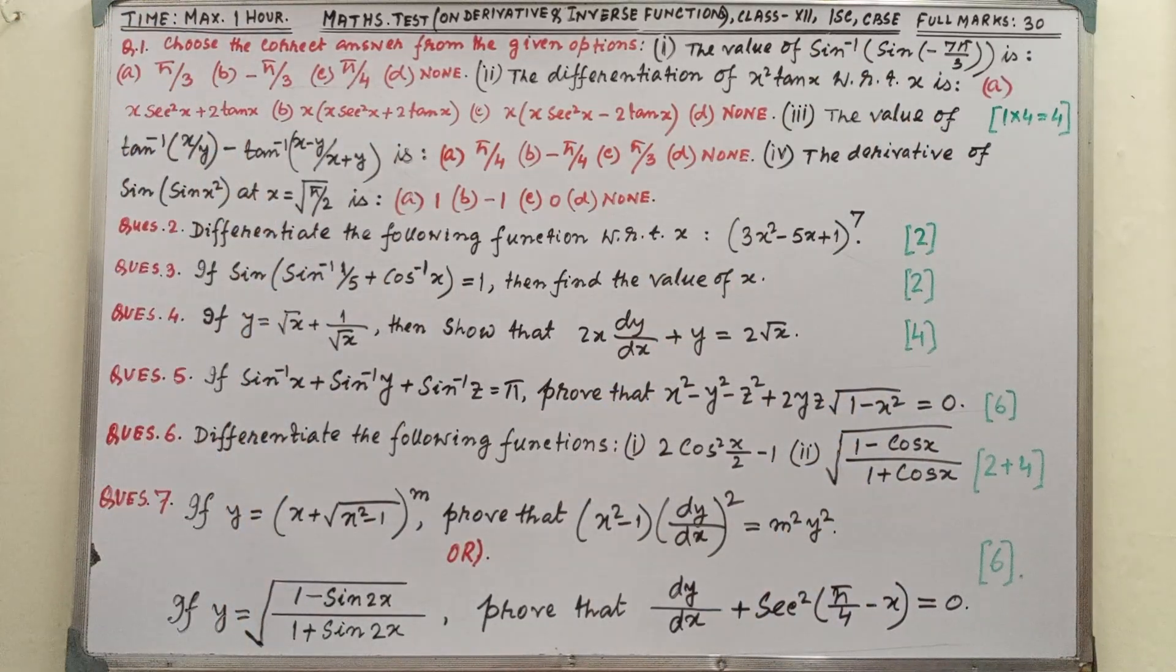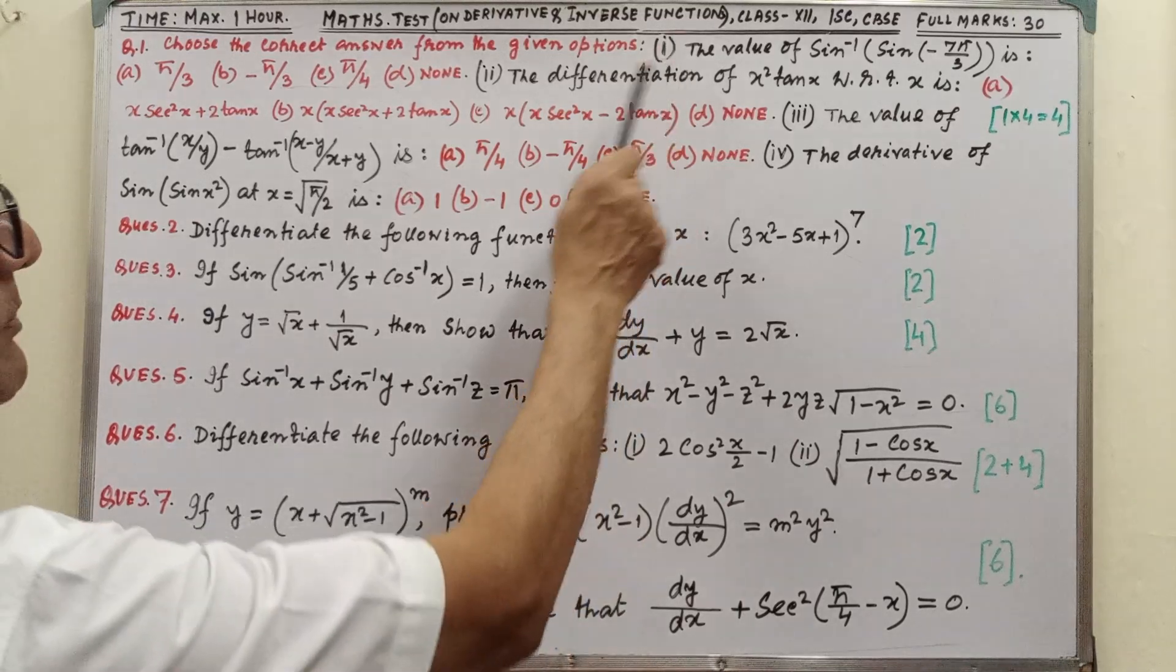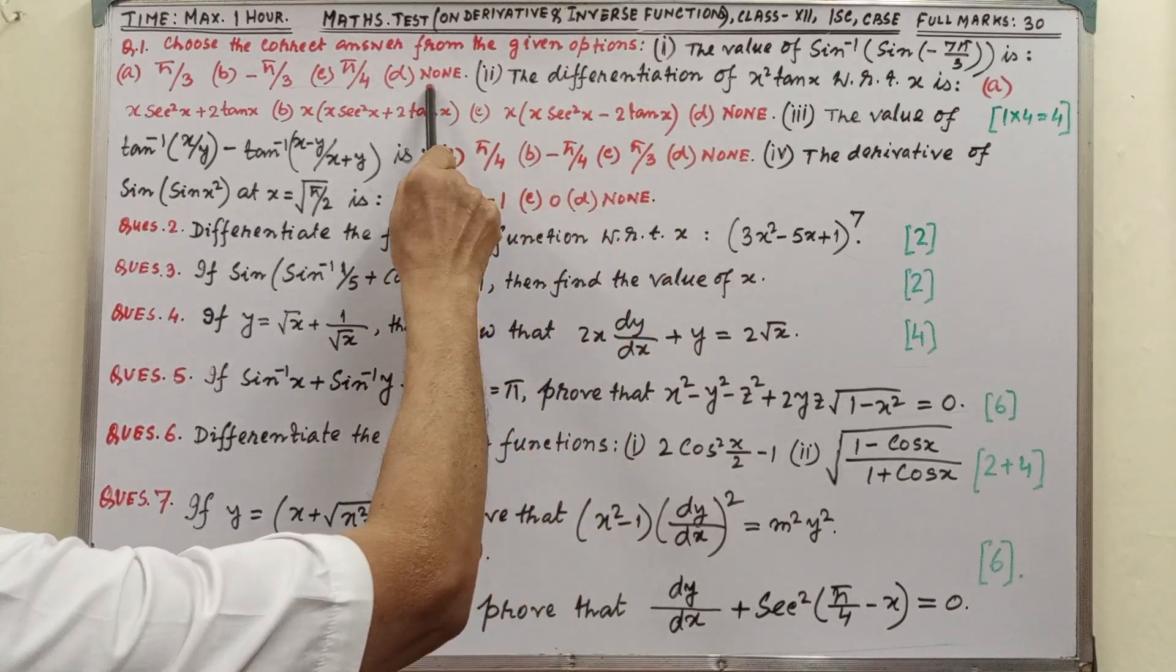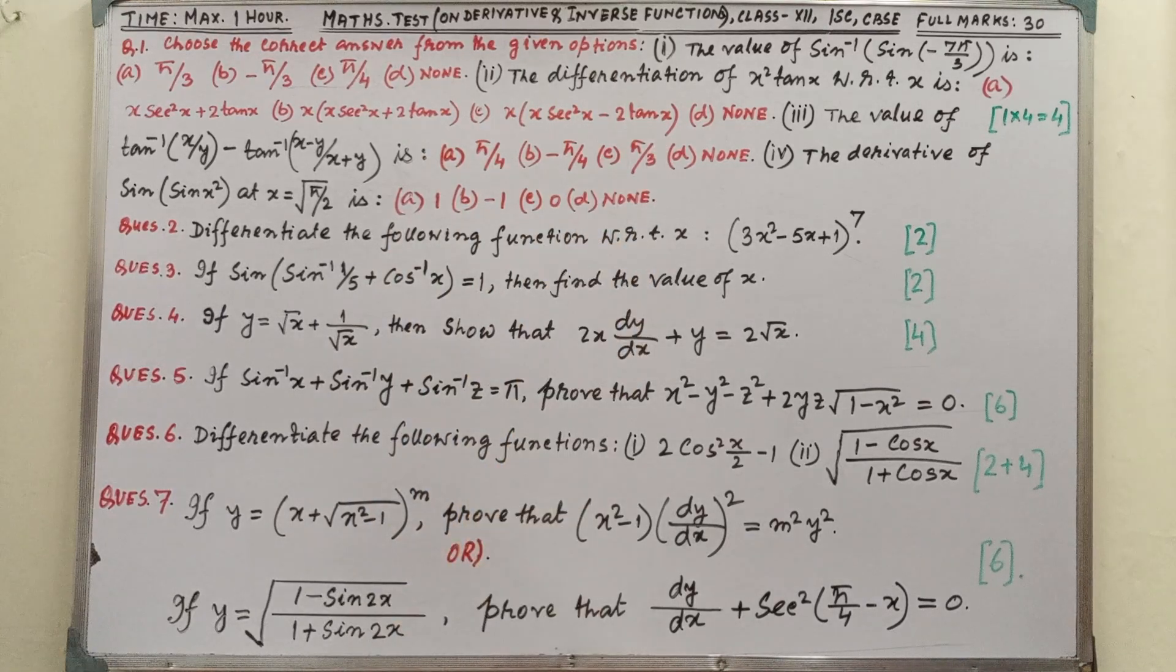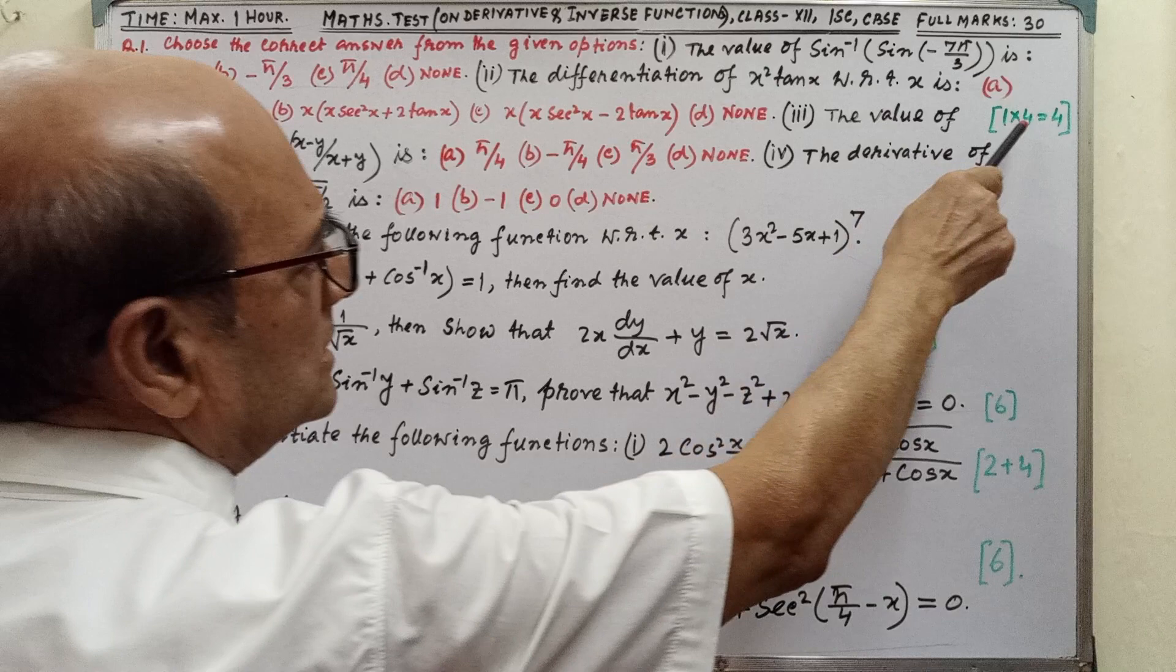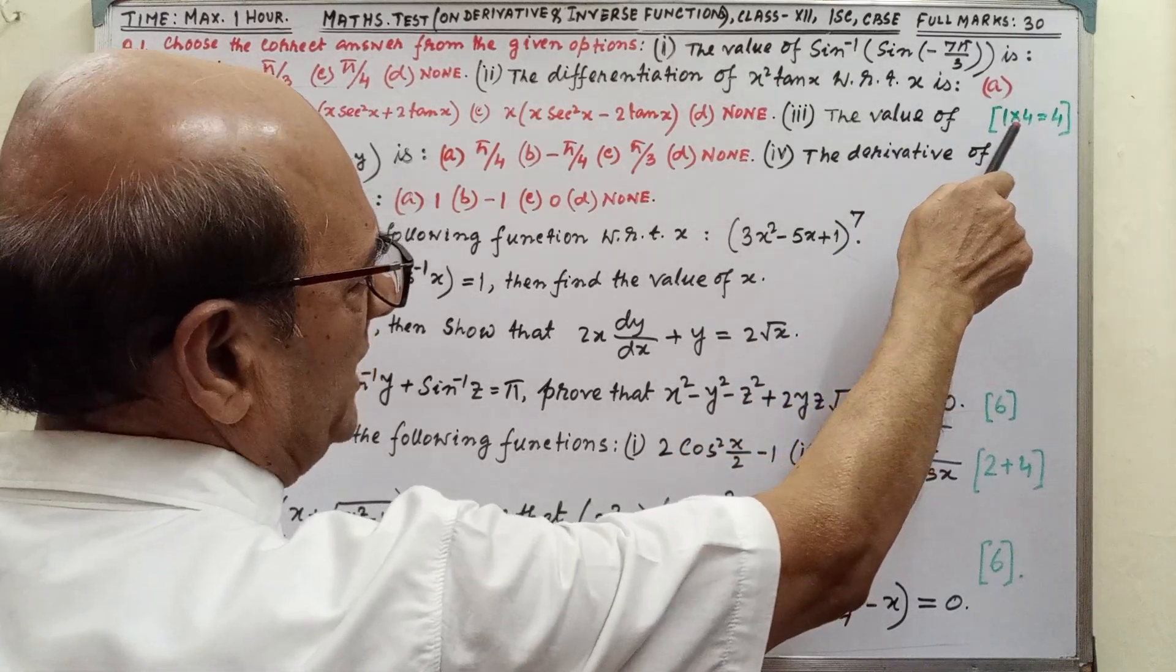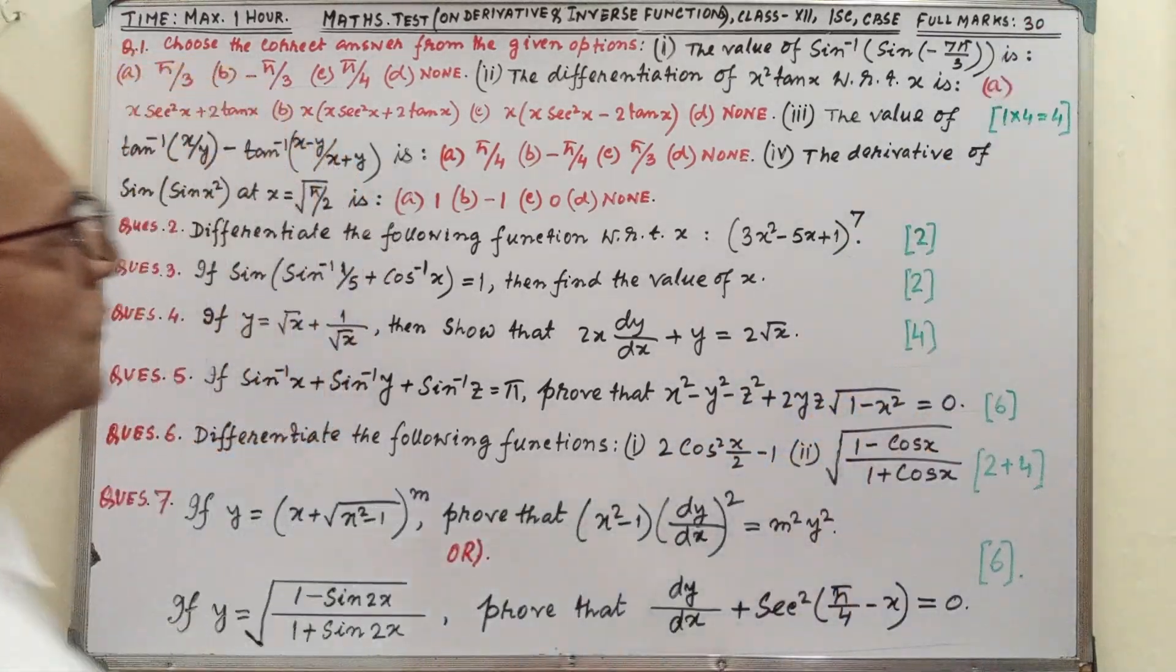Choose the correct answer from the given option. Statement and options are given clearly. There are 4 MCQ marks, 1 into 4, that means each 1 mark and total 4 marks.